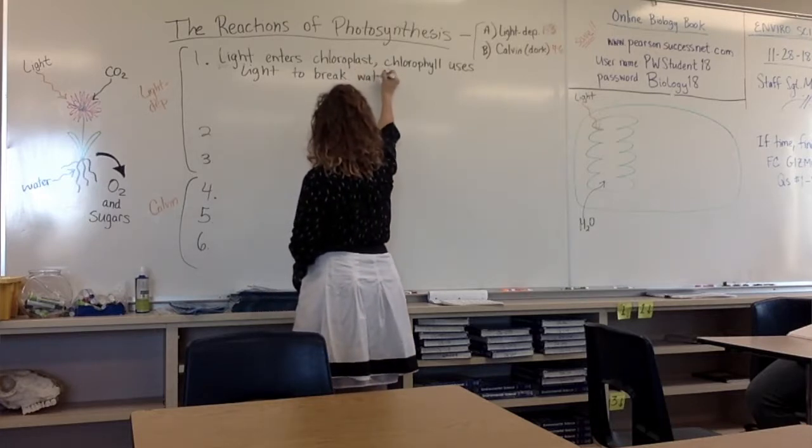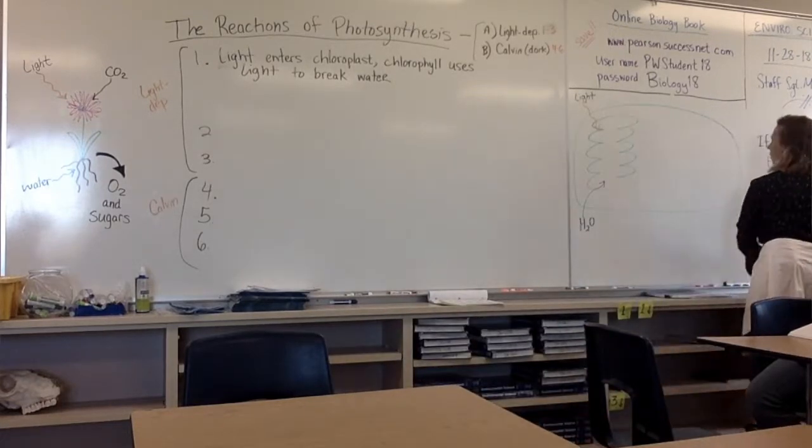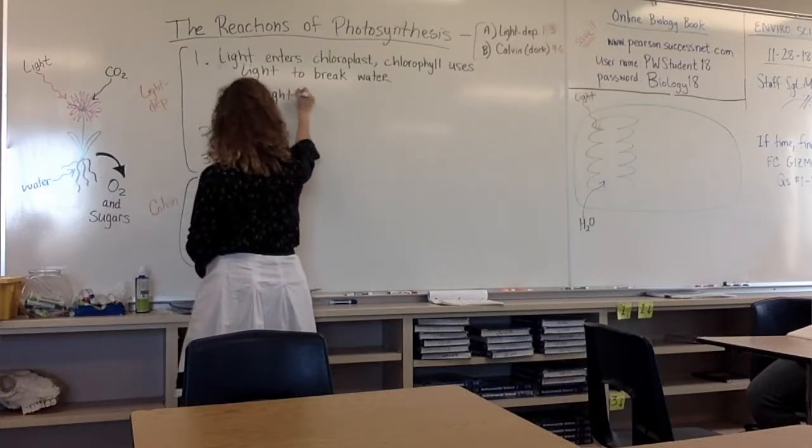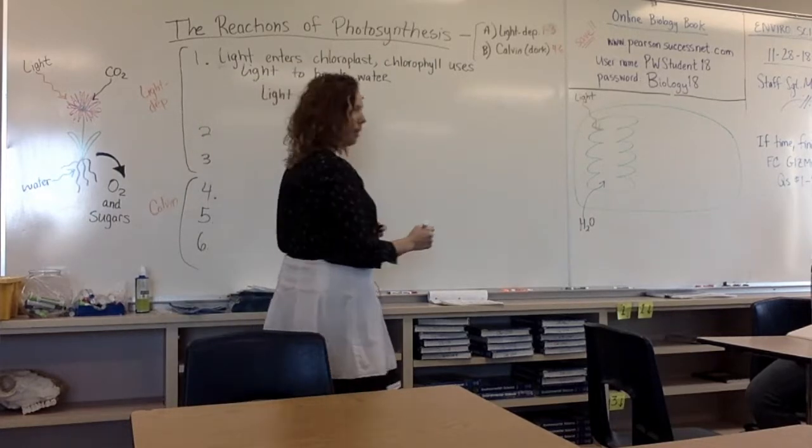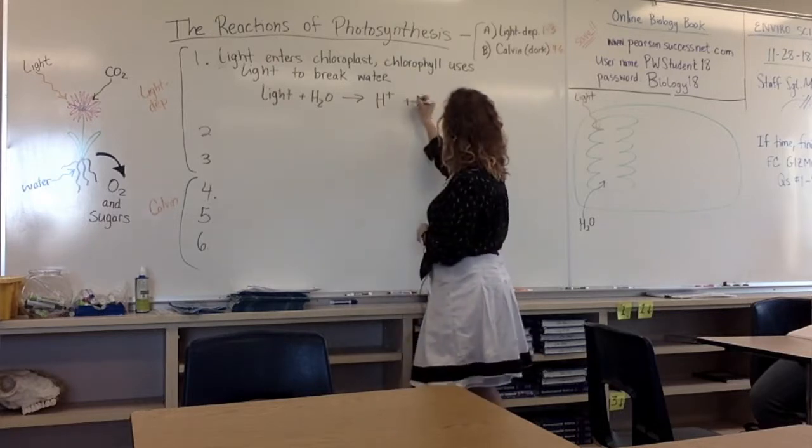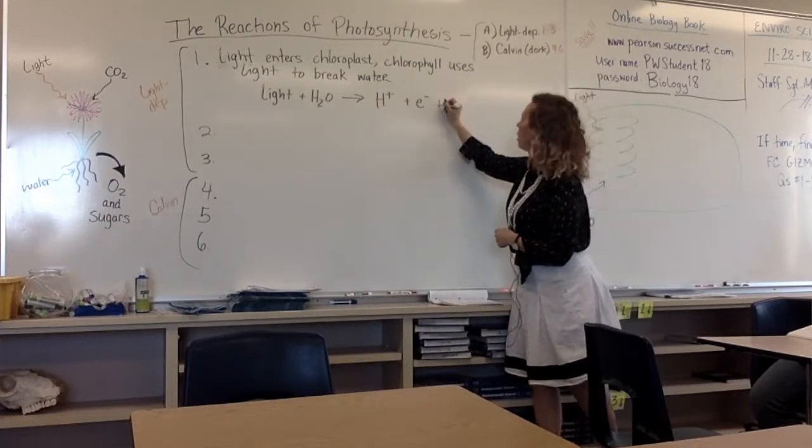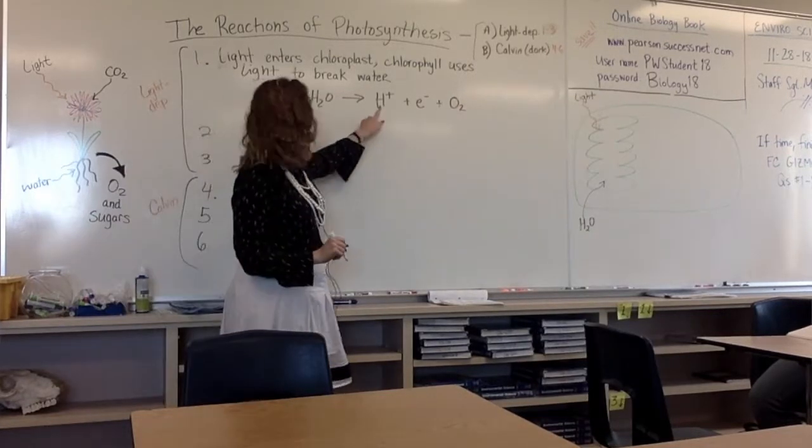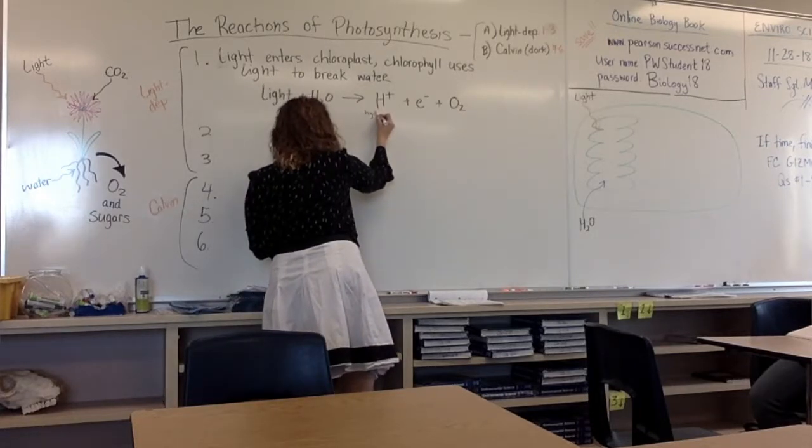You'll want to write this down and I'll write out a little equation for you as well. So, it kind of looks like this: Light plus water makes hydrogen ion, which we saw in vocabulary earlier, makes electrons, and it makes oxygen.